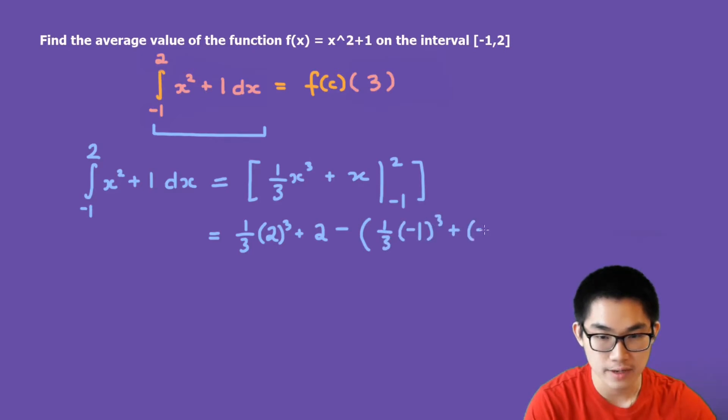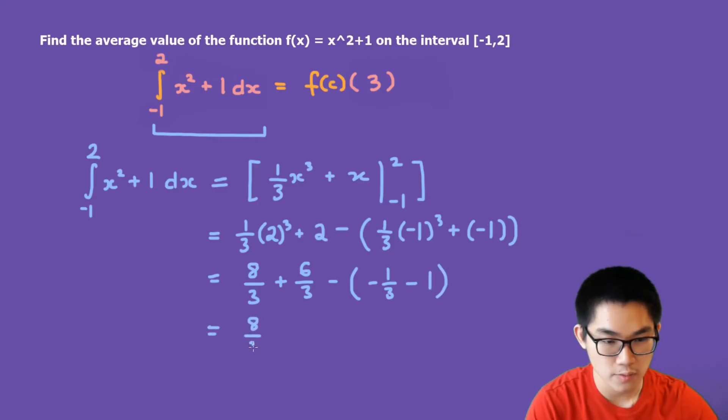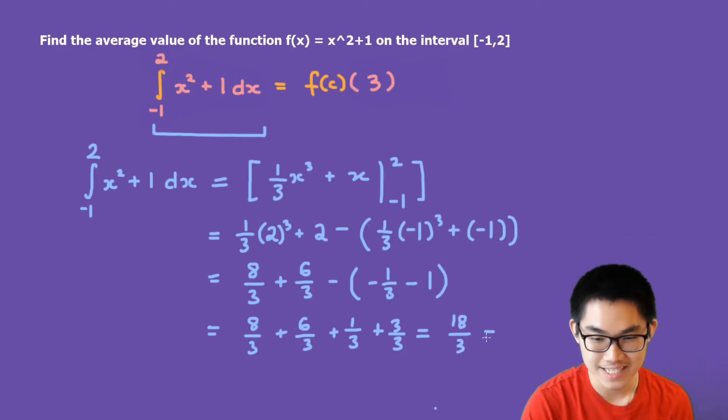And this is equal to 8 over 3, plus 6 over 3, minus, this in here is going to be negative 1 over 3, minus 1. This is equal to 8 over 3, plus 6 over 3, or rather plus 1 over 3, and plus 3 over 3. And this is equal to 18 over 3, which is simply 6.